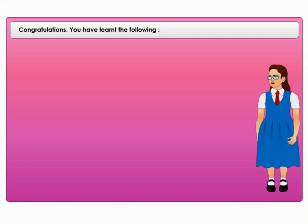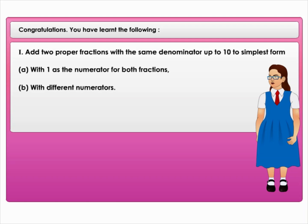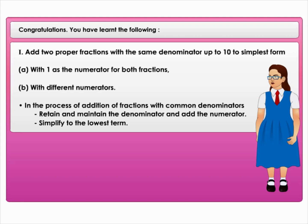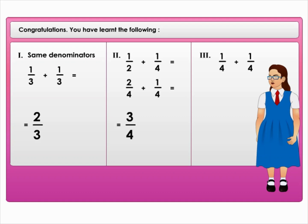Congratulations! You have learnt the following. To add two proper fractions with the same denominator up to ten to its simplest form: retain and maintain the denominator and add the numerators, then simplify to the lowest term. For example, one over three plus one over three gives two over three. To add two proper fractions with different denominators up to ten to its simplest form: find equivalent fractions with a common denominator. For example, one over two plus one over four is two over four plus one over four, which gives three over four.